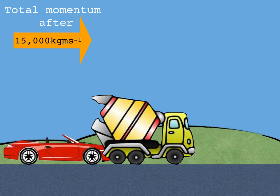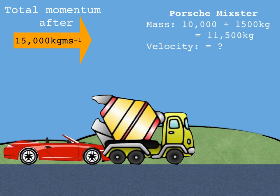But now because we're trying to work out their combined velocity after the crash we need to use their combined mass. So imagine the Porsche and the cement mixer have smashed together, they've sort of made one vehicle, let's call it a Porsche mixer.